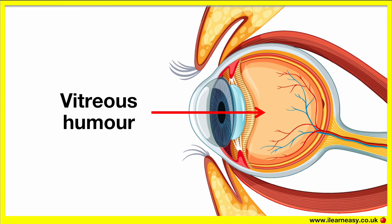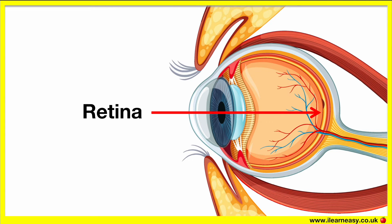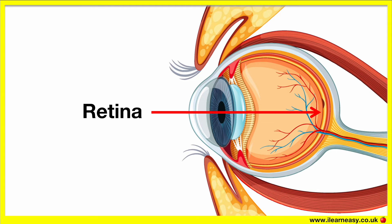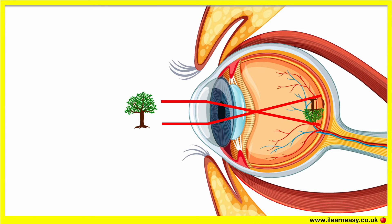The light then passes through the vitreous humour and eventually reaches the layer at the back of the eye called the retina. Most of the light that enters the eye is focused on a focal point on the retina, known as the macula or the fovea. The retina is made up of cells that convert the light into electrical impulses. The retina perceives the world as upside down, but it's the brain that flips the image.